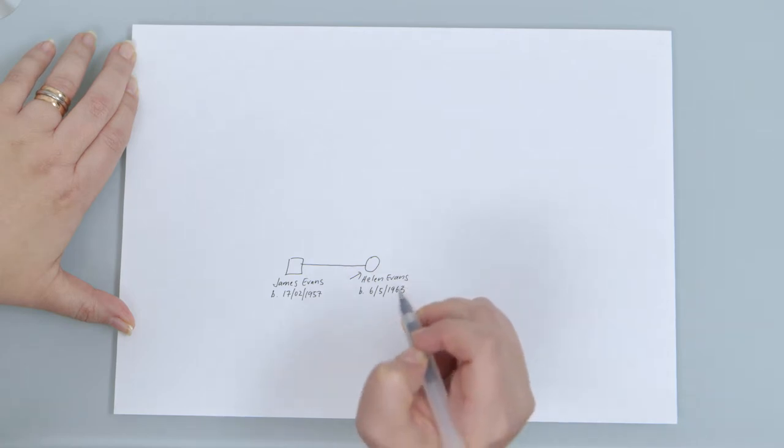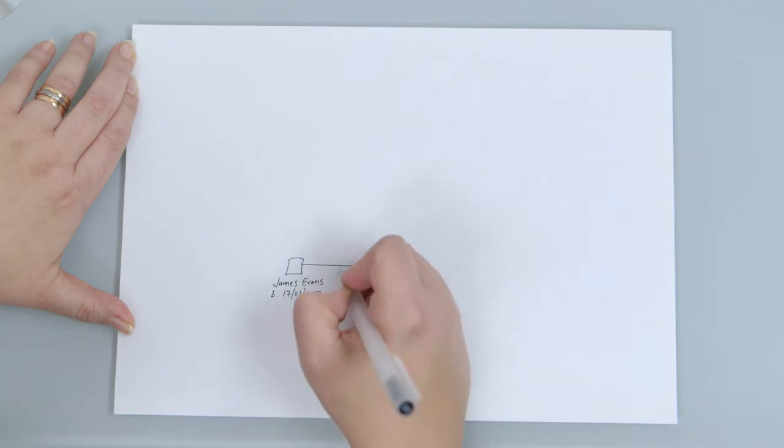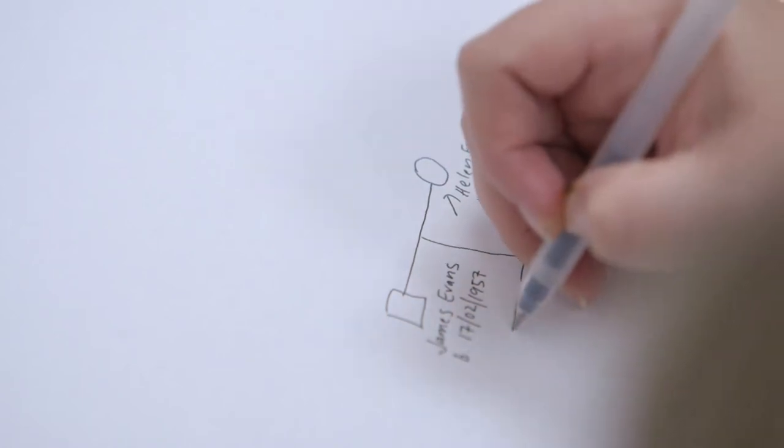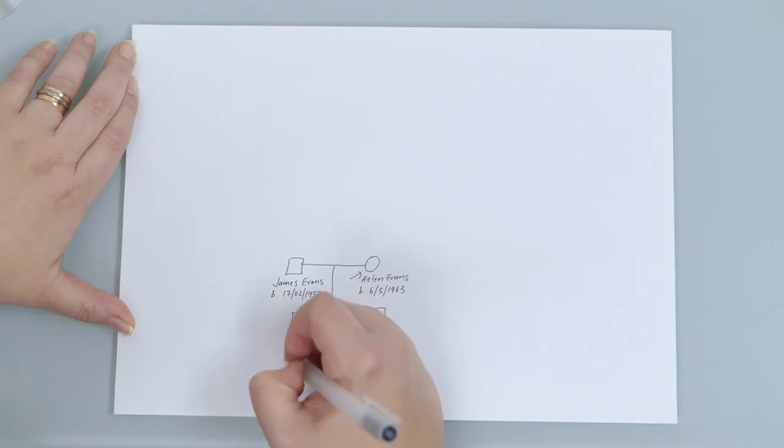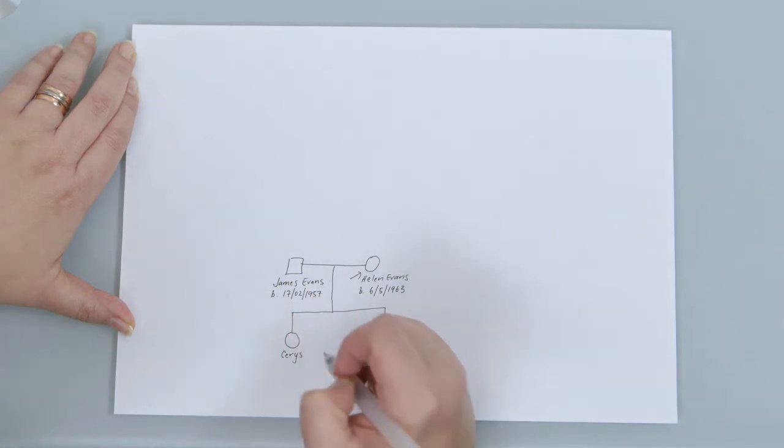Okay, and you and James have Keris and Gavin, is that correct? Yes it is. All right, could you just spell Keris for me? Yeah sure, C E R Y S. Okay, and her surname is Evans as well? Yes.